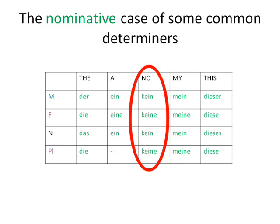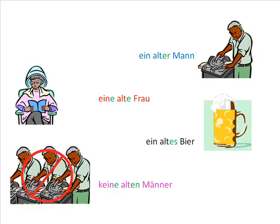After ein or kein, adjectives decline with the following endings: -er for masculine, -e for feminine, -es for neuter, and -en for plural. So you get: 'ein alter Mann' — an old man; 'eine alte Frau' — an old woman; 'ein altes Bier' — an old beer; and 'keine alten Männer' — no old men.